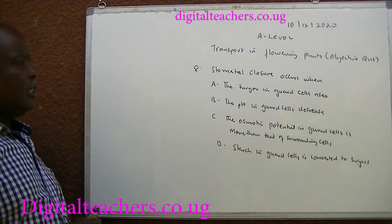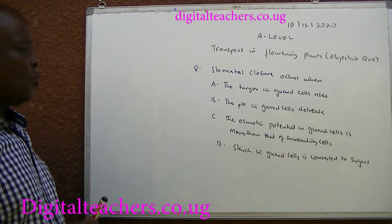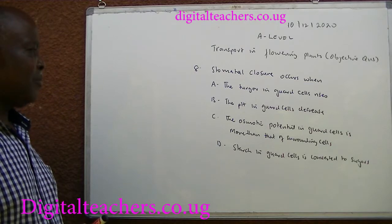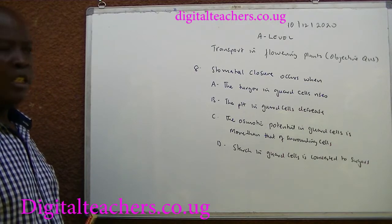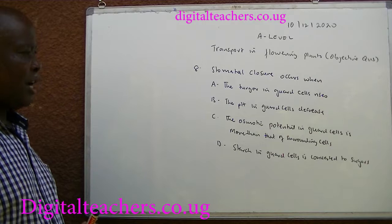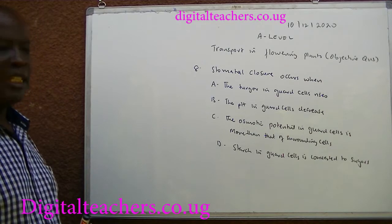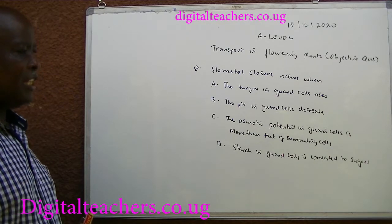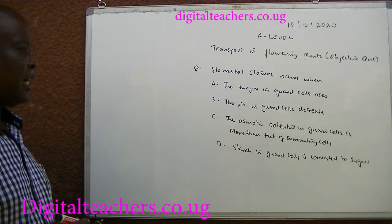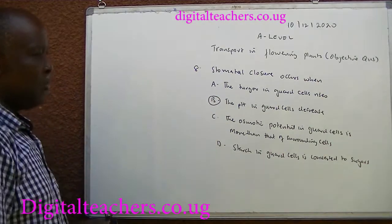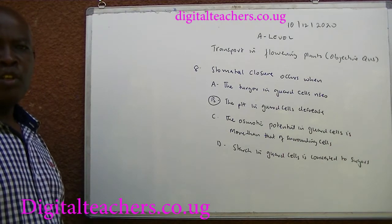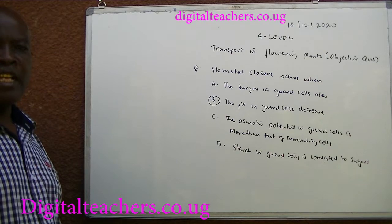Number 8. Stomata closure occurs when A. The turgor in the guard cell rises. B. pH in the guard cell decreases. C. Osmotic potential in the guard cells is more than that of surrounding cells. D. Starch in the guard cells is converted to sugar. You can pause and answer. The answer is B. When the pH decreases, sugars are converted to starch. Osmotic potential in the guard cells falls.